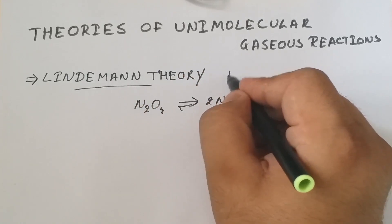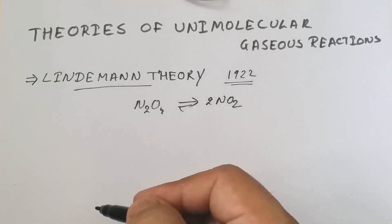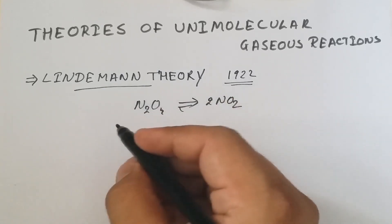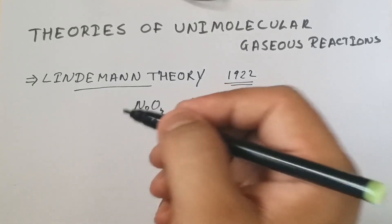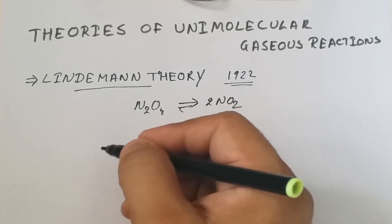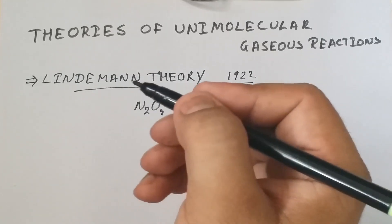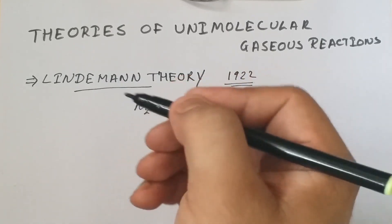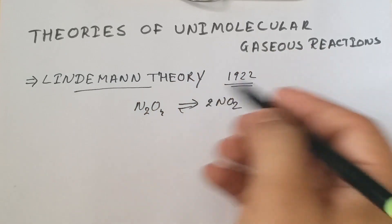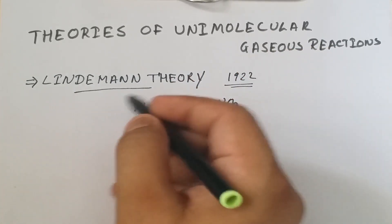This theory was proposed by Lindemann around 1922 to explain the behavior of unimolecular reactions. This theory is also explained on the basis of bimolecular collisions by molecular collision theories as well as activated complex theories. On the basis of collision theory, this theory was proposed.